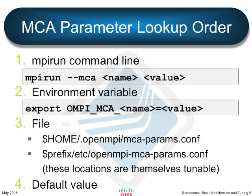We actually have four different ways of specifying MCA parameters, listed in priority order. The first is on the MPI run command line — you do --mca and then the name of the parameter and the value. This is the highest precedence. Next, you can set via an environment variable: set OMPI_MCA_ and the name equals the value. This is a nice way for system administrators to set a site-wide default. Third, we take a pair of files — under the user's home directory at .openmpi/mca-params.conf, you can put key=value lines. Or a system administrator can put an etc/openmpi/mca-params.conf file where $prefix is where OpenMPI is installed.